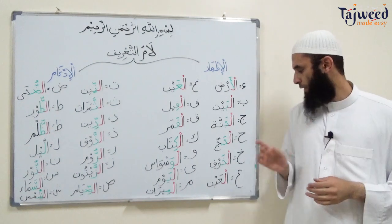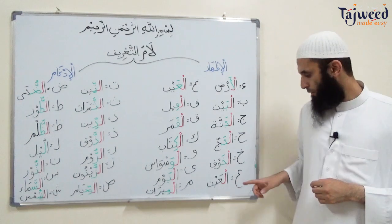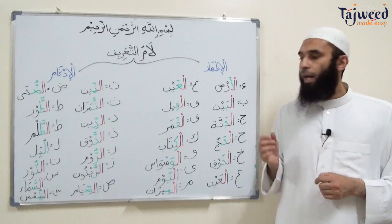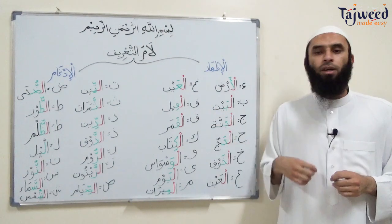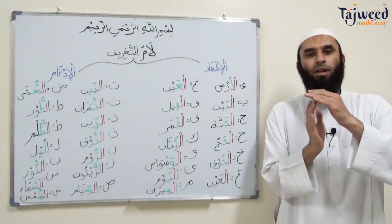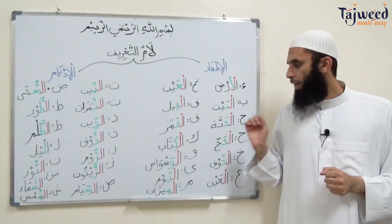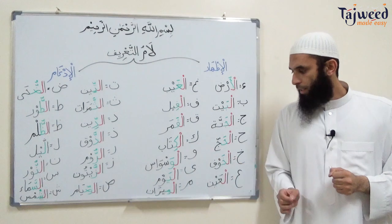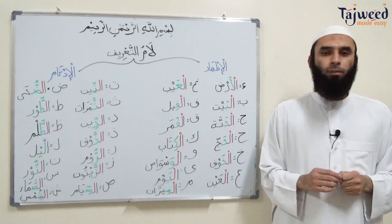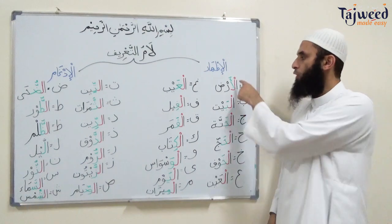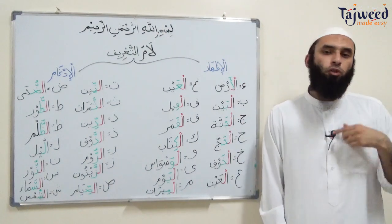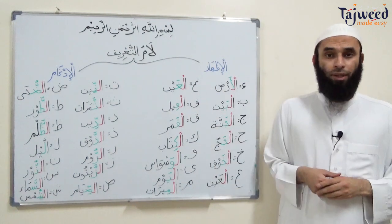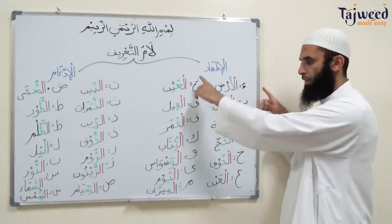Continuing the moon letters examples with إظهار: أَلْخَوْف, أَلْعِين, أَلْغَيْب, أَلْفِيل, أَلْقَمَر, أَلْكِتَاب, أَلْوَسْوَاس, أَلْيَوْم, أَلْمِيزَان. With all 14 moon letters, the لام is written with a sukun and pronounced clearly - this is how the Arabs used to pronounce لام التعريف when it comes to nouns beginning with these 14 letters.